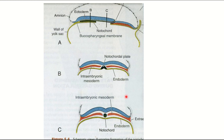The structure is called the trilaminar germ disc because the epiblast produces the mesoderm, replaces the hypoblast to form the endoderm, and itself is converted into the ectoderm. So all three germ layers — ectoderm, mesoderm, and endoderm — are derived from the epiblast.